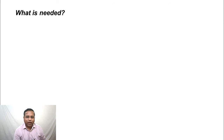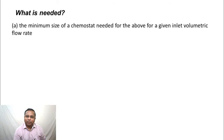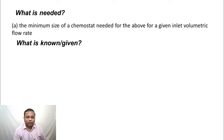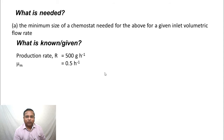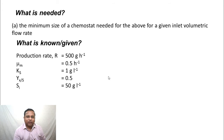The solution is as follows. What is needed: the minimum size of a chemostat for the given conditions and a given inlet volumetric flow rate. What is known or given: production rate = 500 g/hr, μm = 0.5 hr⁻¹, Ks = 1 g/L, Yx/s = 0.5, and Si (inlet substrate concentration in the feed) = 50 g/L.